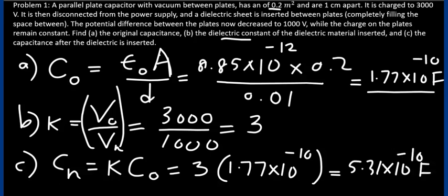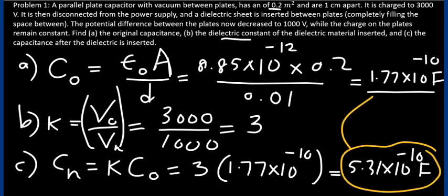Together, it gives you 5.31 × 10⁻¹⁰ farads. And you see that this capacitance is larger than the original, as it should. That solves the problem.